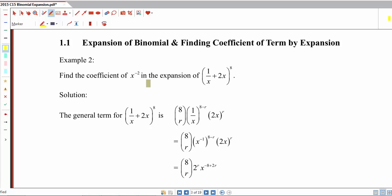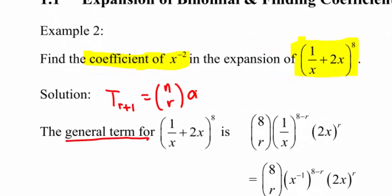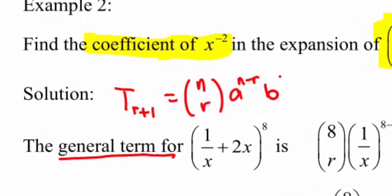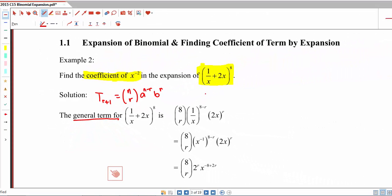Example 2. Find the coefficient of x to the power of negative 2 in the expansion of this. Now before we can do that, we need to know what the general term for this expansion is. Recall that at the beginning of the video, we talked about the r plus 1 term, or general term, to be n choose r times a to the power of n minus r, b to the power of r. So following this,